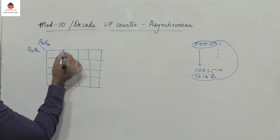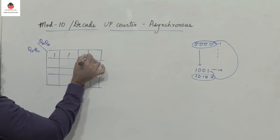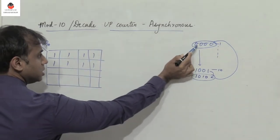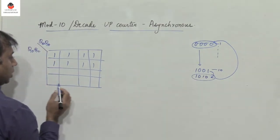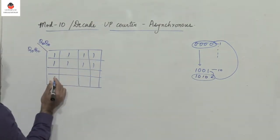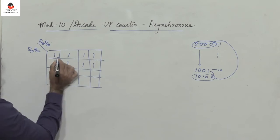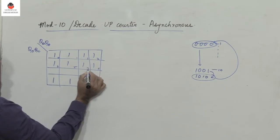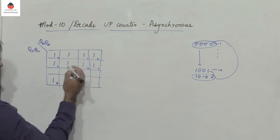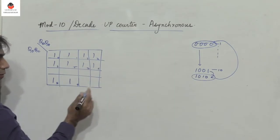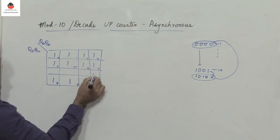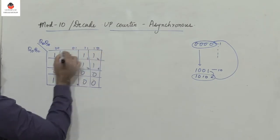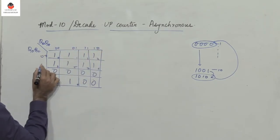In this case, we have a 1 for all the first 10 states — that is from 0000 to 1001 — so states 0 through 9 are 1. For states 10 to 15, the output has to be 0. So we have to simplify the four-variable K-map.